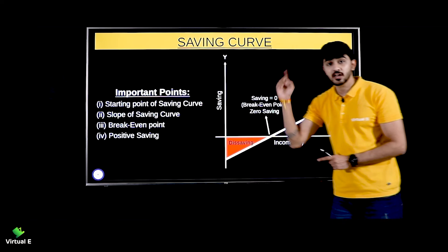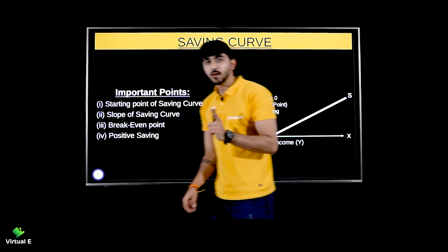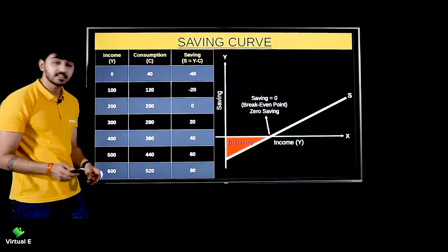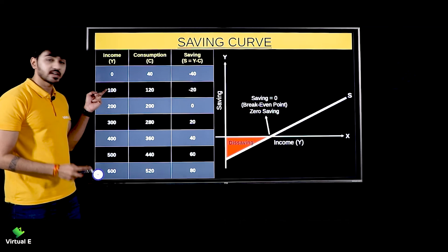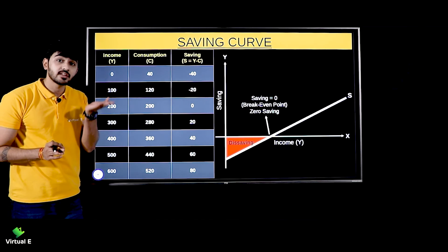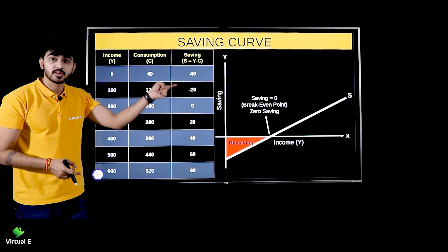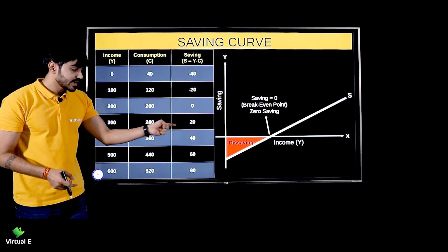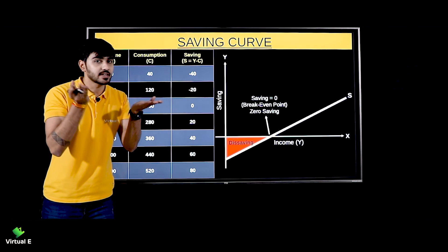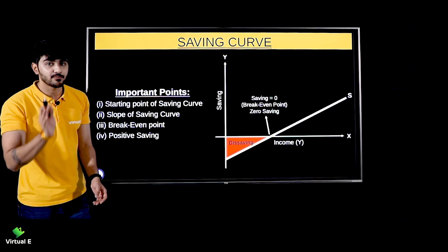Second: the slope of the saving curve. It is upward sloping. Why? Because there is a positive direct relationship between income and savings — with the increase in income, savings should also increase. So the savings curve will always be an upward sloping curve.